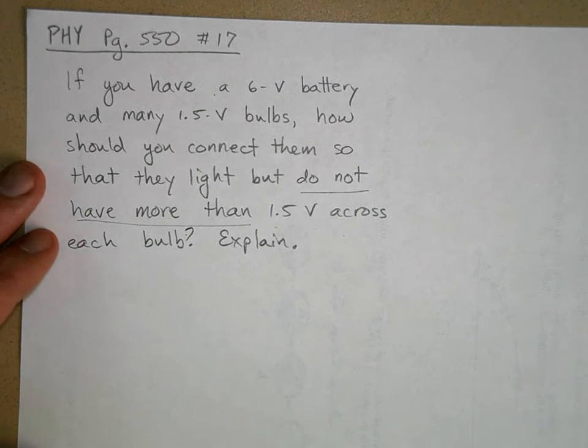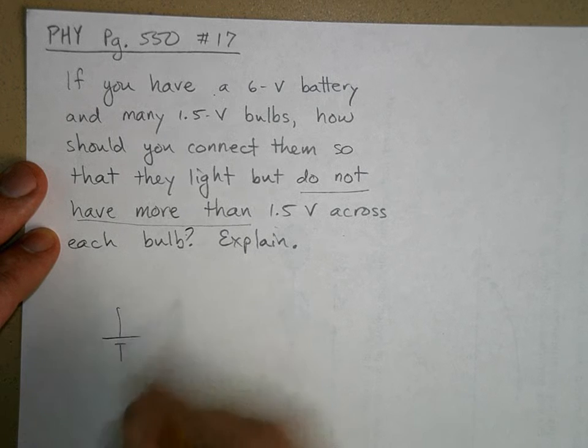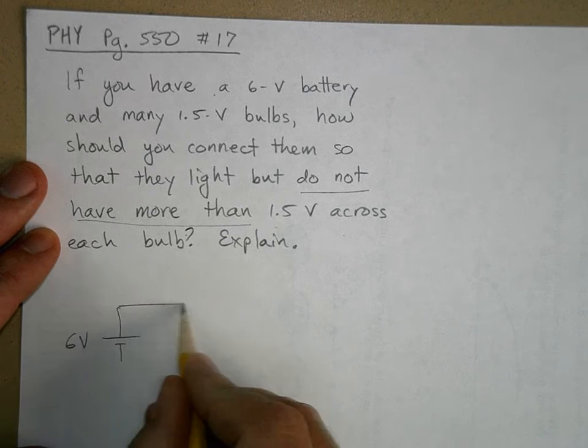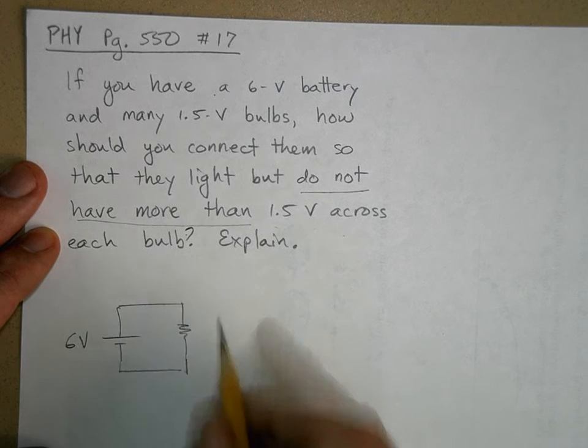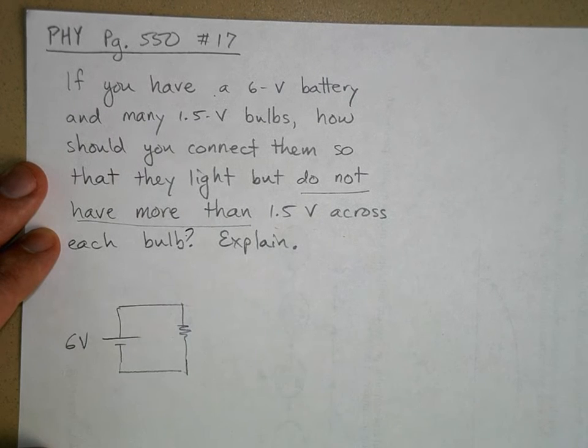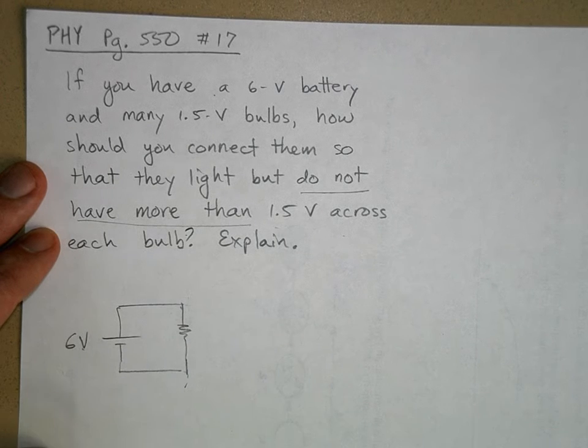Okay, so if I put a bulb like this, so this is 6 volts. If I put one bulb like this, it's going to have a 6-volt drop, right? So I can't do that.